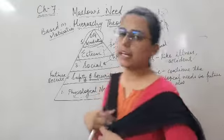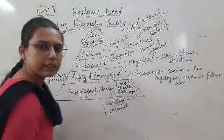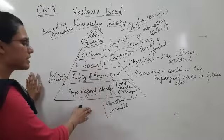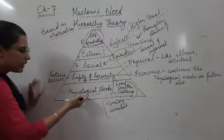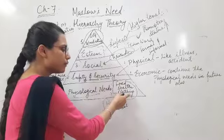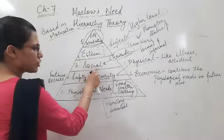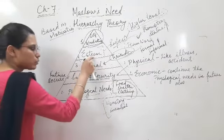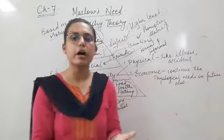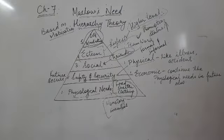So here, Maslow's motivation theory explains that when your employee is in the organization, their basic needs go through these levels, and the last one is self-actualization — where the person achieves their aim in the organization. This is Maslow's Need Hierarchy Theory. Thank you so much.